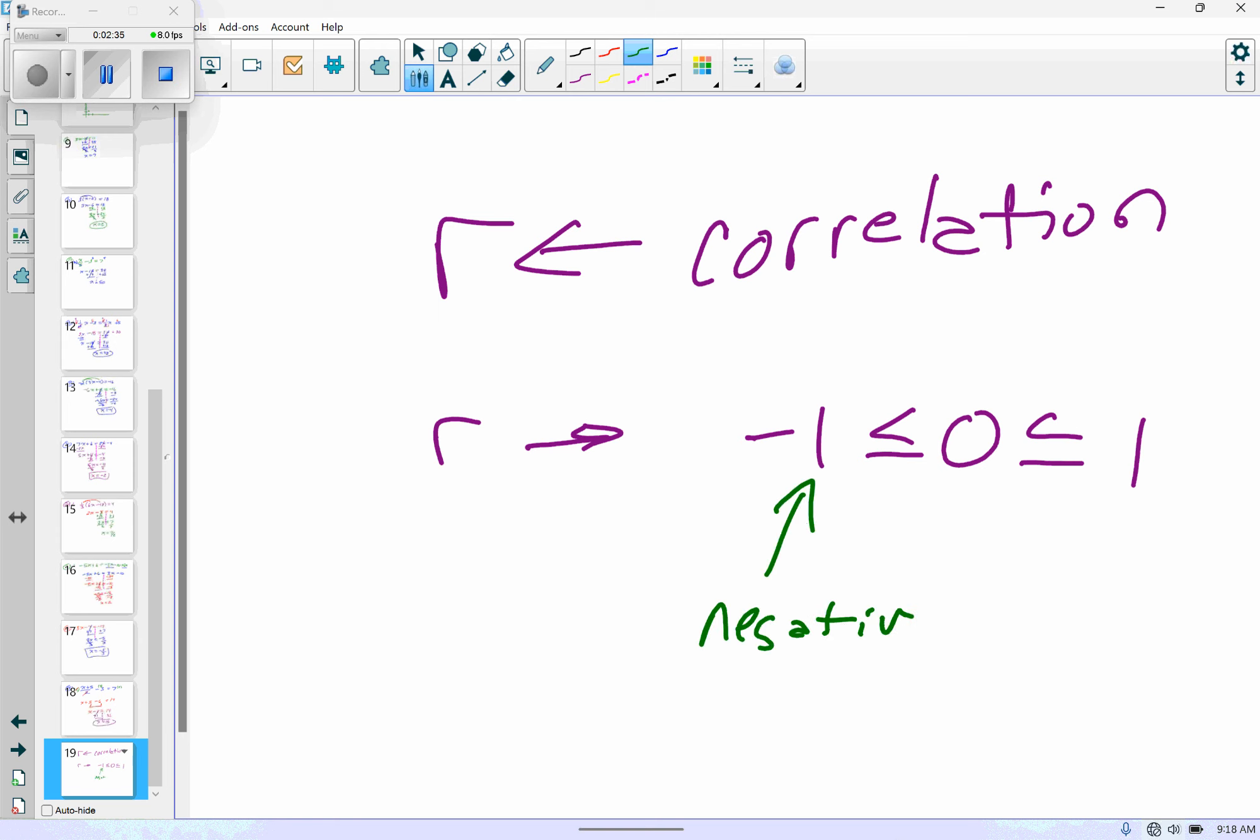If it was positive, it would be a positive slope. The closer you are to positive one or negative one means that your correlation between the two things you're comparing is very close to a straight line. The nice thing is Desmos does correlation for us.